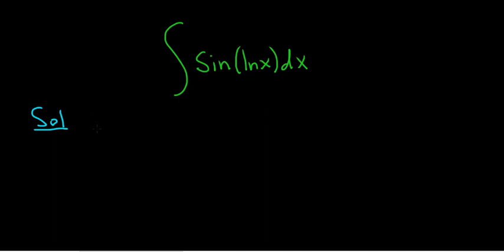So the natural thing to do is to let u be equal to the natural log of x. When you do that, you compute your du. The derivative of the natural log is 1 over x, so you get 1 over x dx.